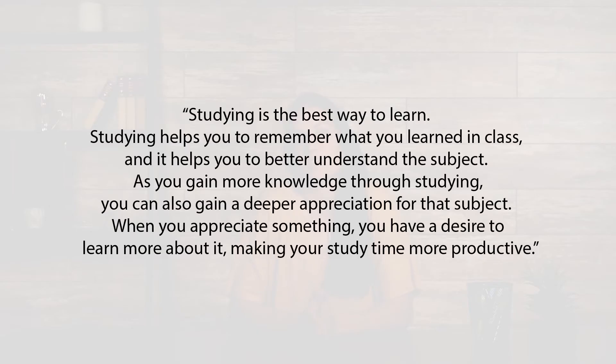Before we go on to the main idea, let's first define topic and hopefully clear up some confusion. The topic of a paragraph is the simplest description of what the paragraph is about. For example: studying is the best way to learn. Studying helps you to remember what you learned in class, but it also helps you to better understand the subject. As you gain more knowledge through studying, you can also gain a deeper appreciation for that subject. When you appreciate something, you have a desire to learn more about it, making your study time more productive. The topic of this paragraph is studying. The topic should be composed of one word if possible, but sometimes it can be a very short phrase like 'study hard' or 'keep studying.'